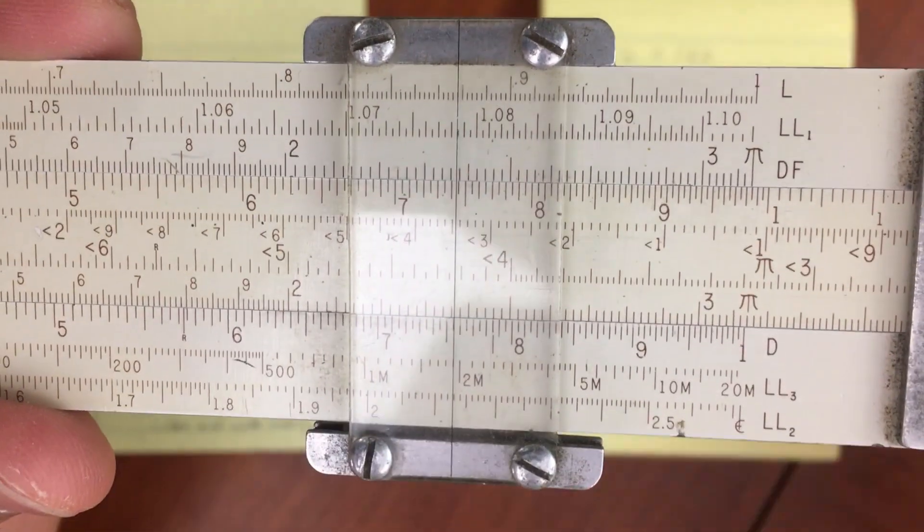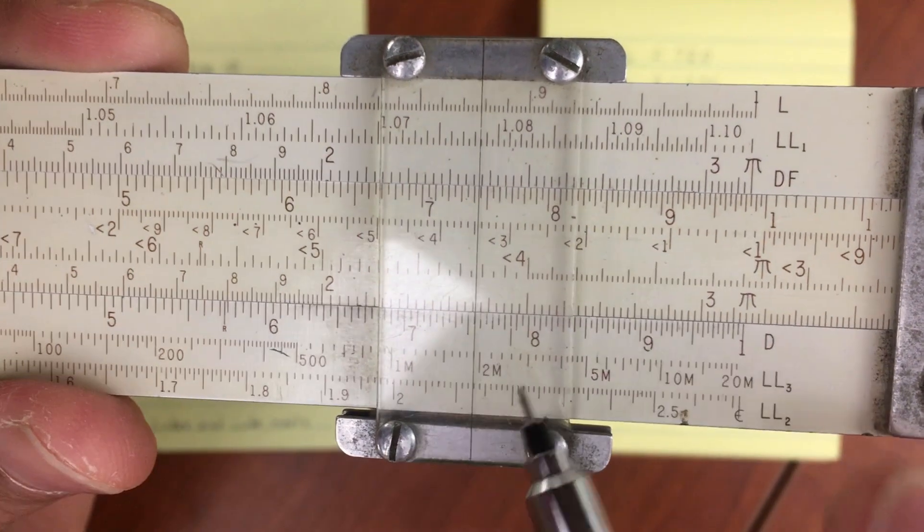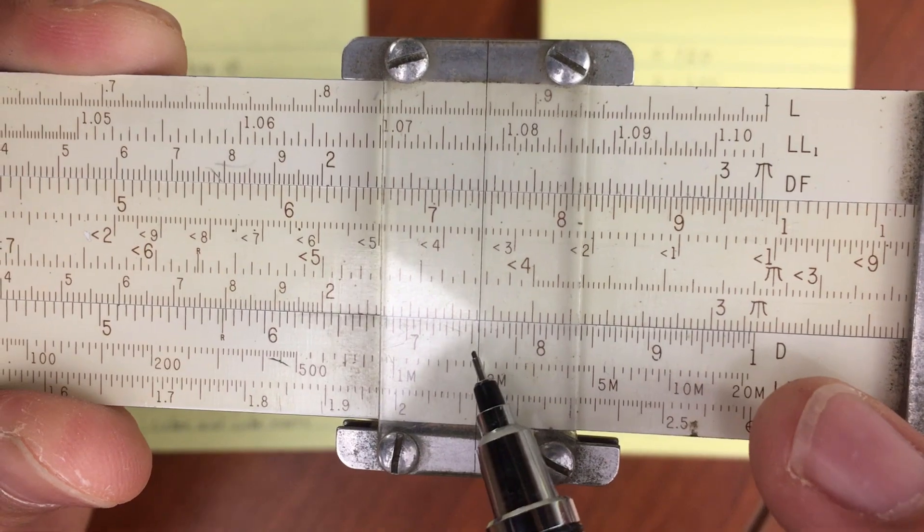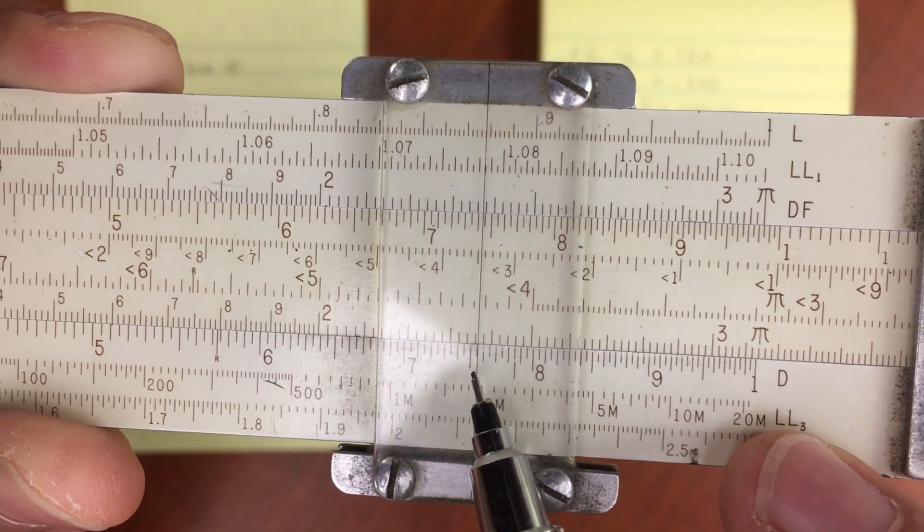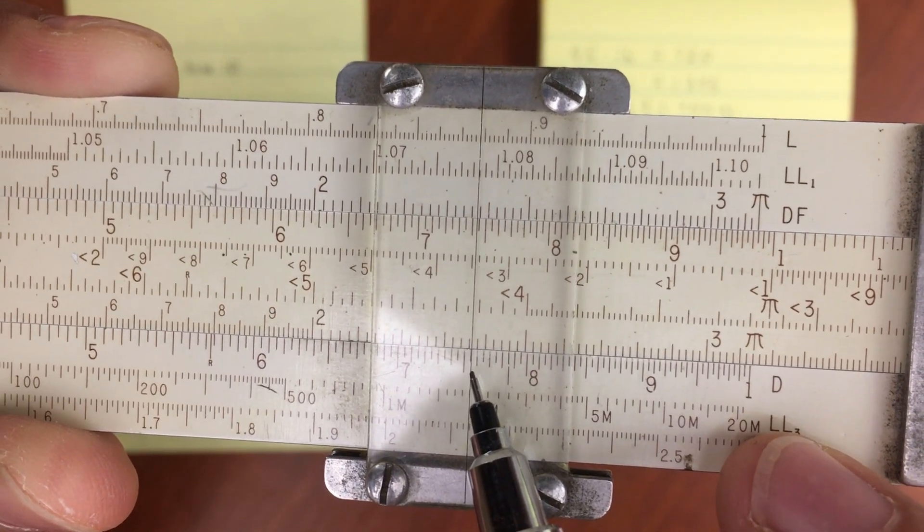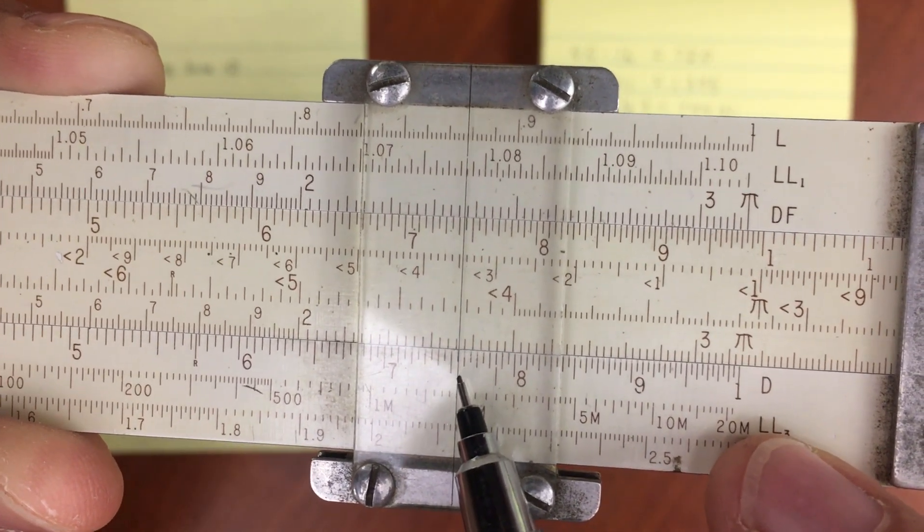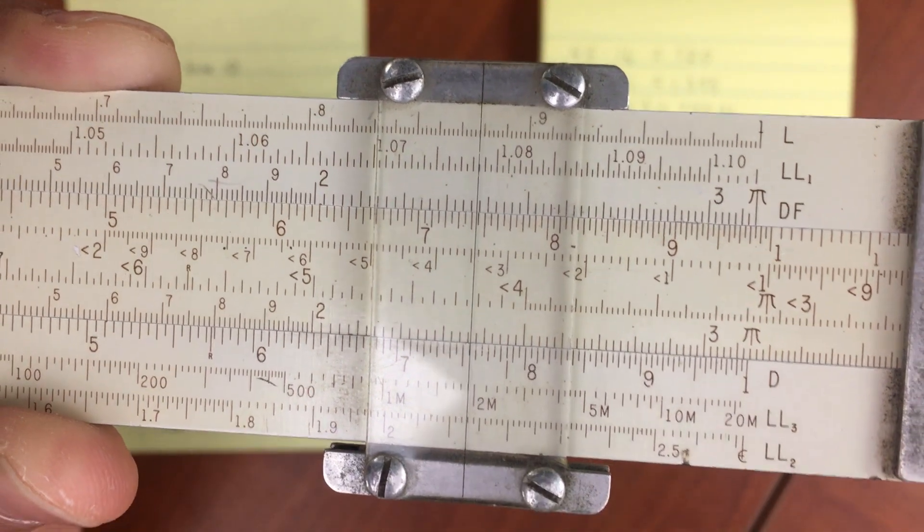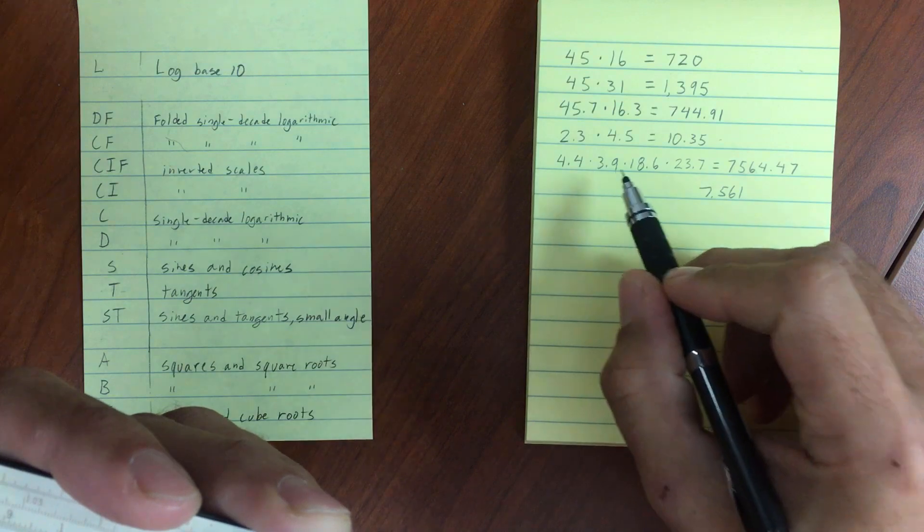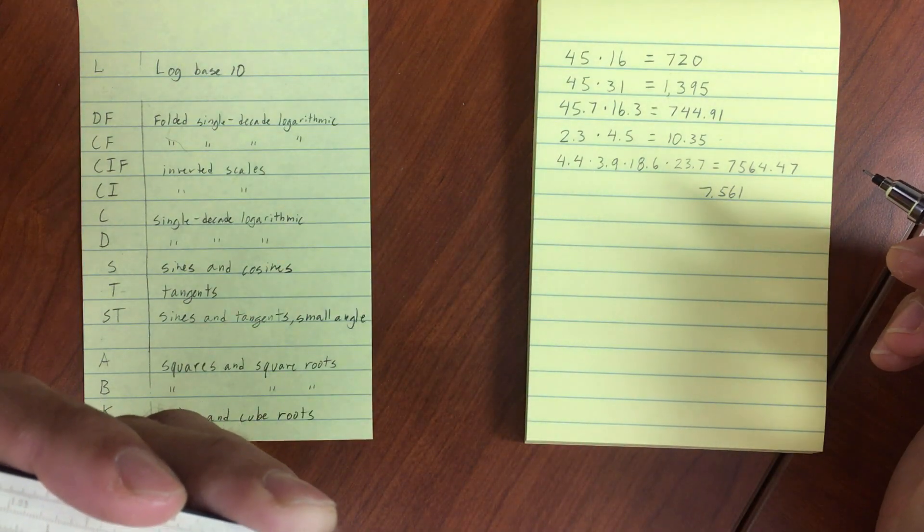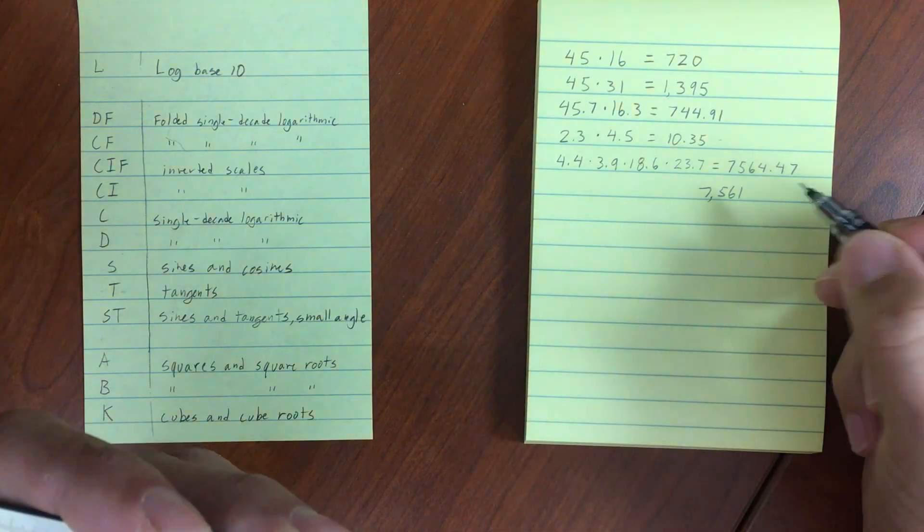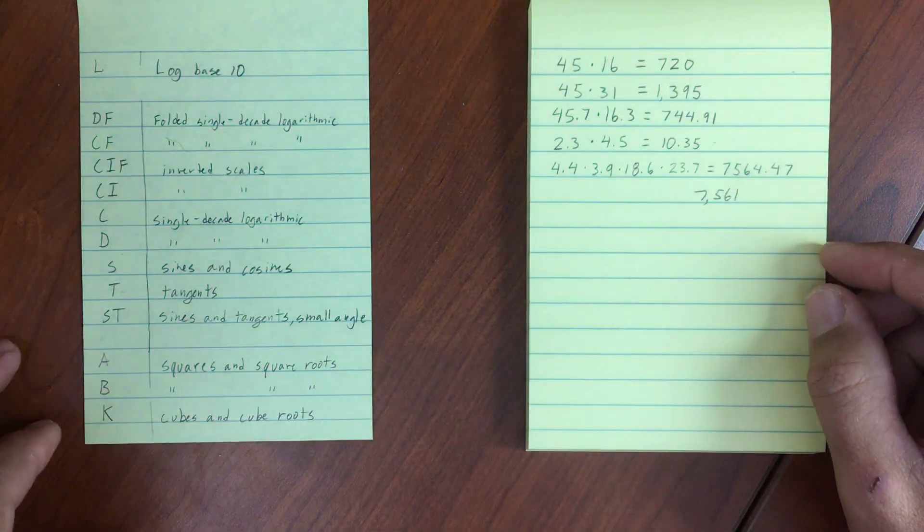And read off our final number on the D scale. So we have right around 7, 1, 2, 3, 4, 5. 7.56. Just a little bit past 7.56. 7.561 I'll call it. 7.561. And again, just looking at these numbers, we'd have to guess about what the decimal place would be. So that's going to end up being 7,561. And that's multiplication.